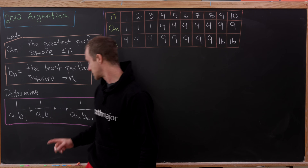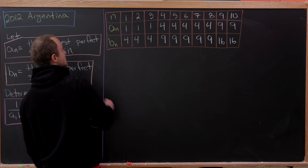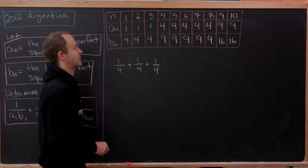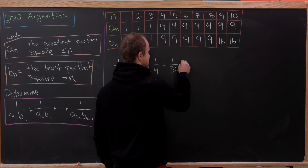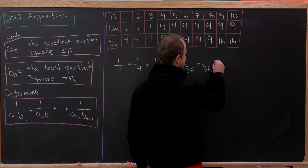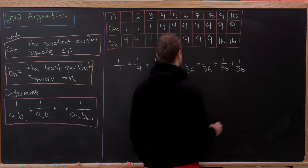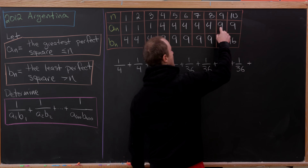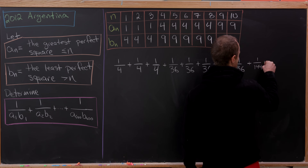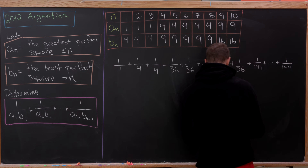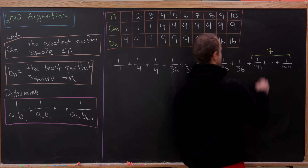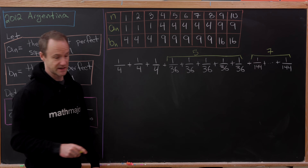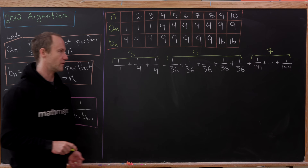Let's write down the first few terms of the sum. We get 1/4 + 1/4 + 1/4 — that's the first 3 terms. Then 5 copies of 1/36 (since 1·4 = 4 and 4·9 = 36). And then 7 copies of 1/144 (since 9·16 = 144). So we have 3 copies of 1/4, 5 copies of 1/36, and 7 copies of 1/144.